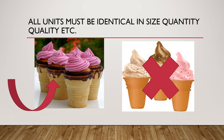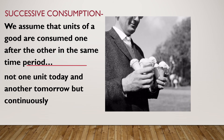The second assumption is successive consumption. We assume that units of a good are consumed one after the other in the same time period — not one unit today and another tomorrow, but continuously. In the time period of our study, all units of the commodity have to be consumed successively, or in other words, one after the other.